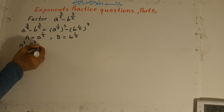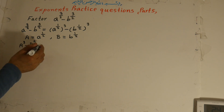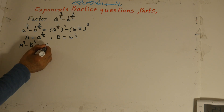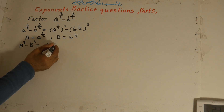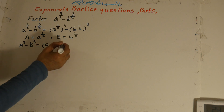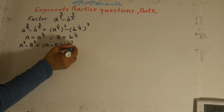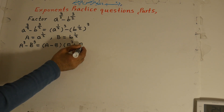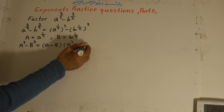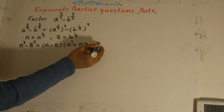According to the factorization law we studied in previous lessons, we can write A cubed minus B cubed as two factors: the first factor is A minus B, and the second factor is A squared plus AB plus B squared.